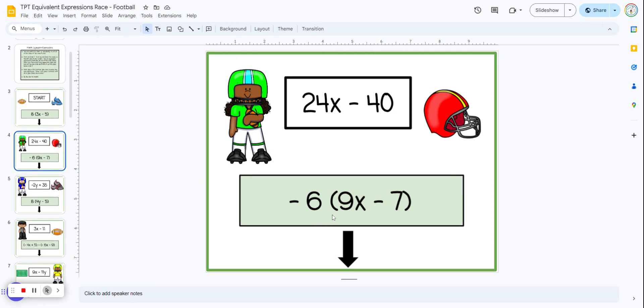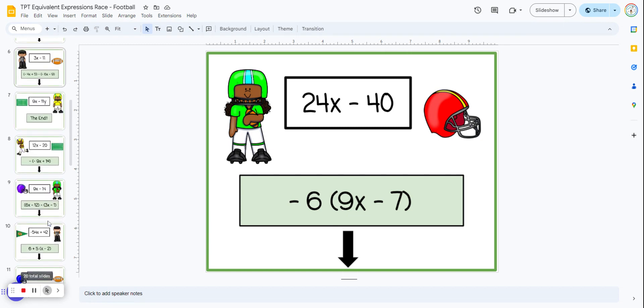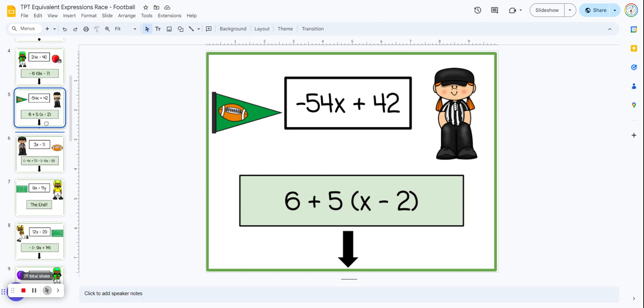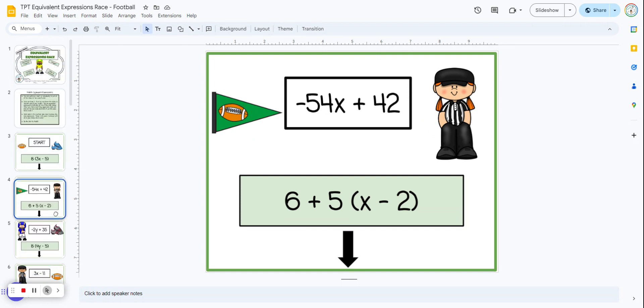Now the slide you just moved, there's a new expression. This one's also distributive property. We're looking for negative 54x plus 42. Again, I'm going to scroll up and down until I find it, click and hold. And now this will be that third slide so that these two now match.